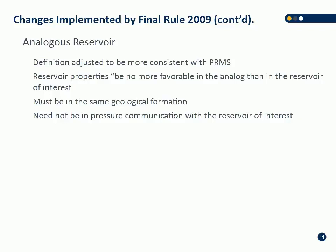For an analog, you can only call another reservoir an analog if in aggregate the properties of your reservoir are as good or better than the analog you're trying to apply. You can't say two reservoirs are analogous if your subject reservoir is a poorer reservoir than the one you're trying to reference. You must be in the same geological formation, though you need not be in pressure communication with the reservoir of interest — it can be a separate accumulation — but the properties have to be as good or better.